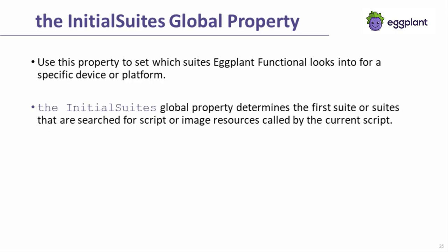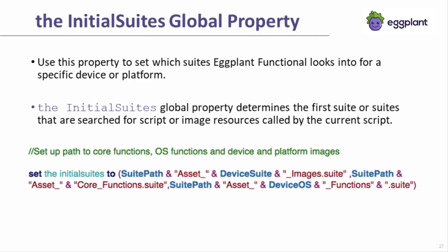The initial suite's global property allows a way to dynamically link the calling suite to the appropriate set of platform-specific scripts and images. More specifically, the initial suites determines the first suite or suites searched when looking for a particular script or image file. Eggplant will search the initial suite before searching the calling suite. If a script or image by that name is found in the initial suites, eggplant will use that version and ignore versions in any other suites, including the helper suites. Here's an example of how you might parameterize the initial suites to substitute in the appropriate suite path and device name at runtime.